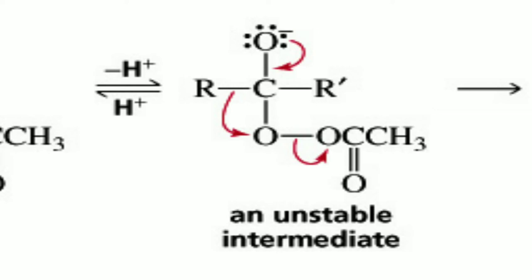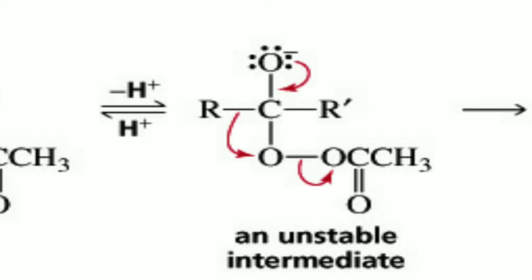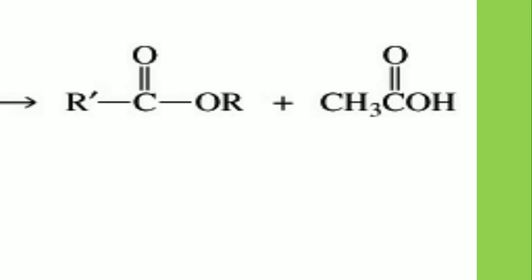When the unstable intermediate is formed, the R group shifts to the oxygen. There is breaking of the C–R bond; the R group shifts to the oxygen, and the O–O bond breaks. All the electrons are accepted by the oxygen of the per acid, and the carbonyl oxygen donates electrons to form a carbon–oxygen double bond. The product R–CO–OR is formed, plus CH₃COOH — the per acid is converted to the acid, and the ketone is converted to an ester.